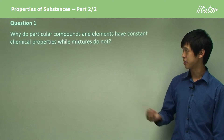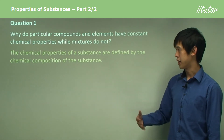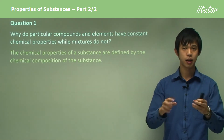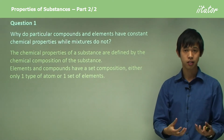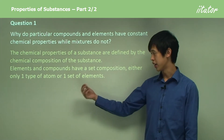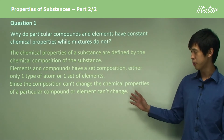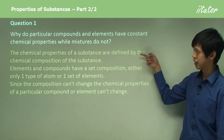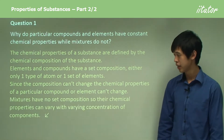Why do particular compounds and elements have constant chemical properties while mixtures do not? The chemical properties of a substance are defined by its chemical composition. Elements and compounds have a set composition — the atoms that make them up will always be the same, it won't change. So either only one type of atom is in an element, or in a compound you have one fixed set of elements. Since the composition can't change, the chemical properties of a particular compound or element can't change either.